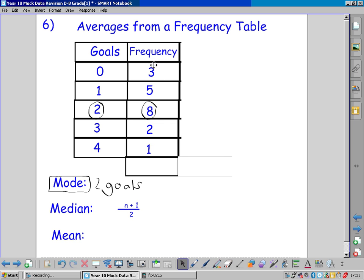So we add them up, 3 and 5 and 8 and 2 and 1, which gives us 19, so that was 19 games in total. So we do 19 plus 1 divided by 2, which is 20 divided by 2, which is 10. So we want to find the score in the 10th game.